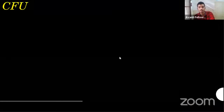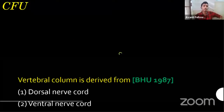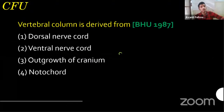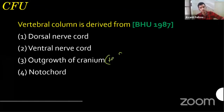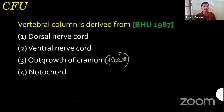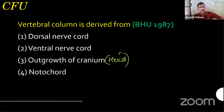Next question: is there a vertebral column, dorsal nerve cord, ventral nerve cord, outgrowth of the cranium, or notochord? For now, just think of the cranium as the head portion. The question is: from where does the vertebral column develop? I'm relaunching the poll.